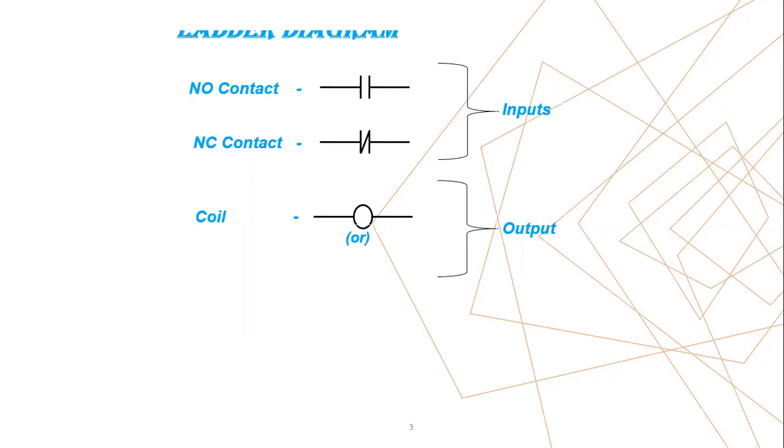So first we'll understand what is NO contact and its working principle. NO contact, so NO means normally open contact. Initially it will be in open state. Whenever input is triggered, it gets closed.